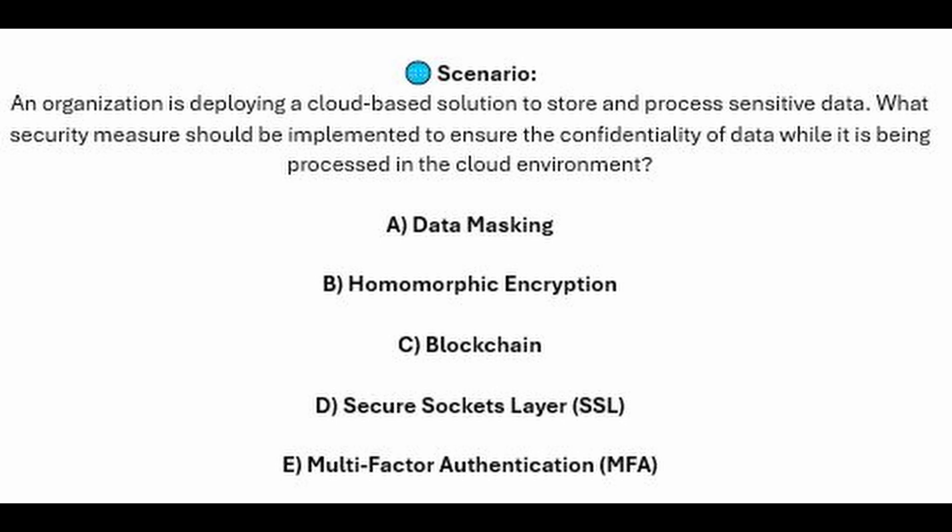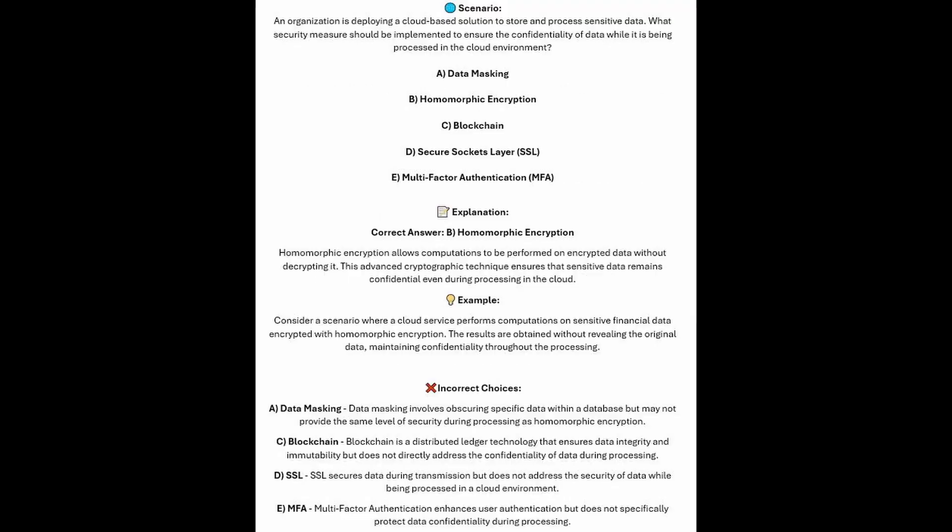And now 5 seconds. And the correct answer is B, homomorphic encryption. Homomorphic encryption allows computations to be performed on encrypted data without decrypting it. This advanced cryptographic technique ensures that sensitive data remains confidential even during processing in the cloud.